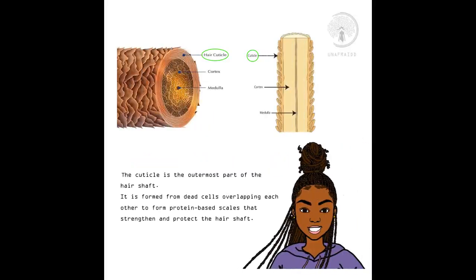The cuticle is the outermost part of the hair shaft. It is formed from dead cells overlapping each other to form protein-based scales that strengthen and protect the hair shaft.